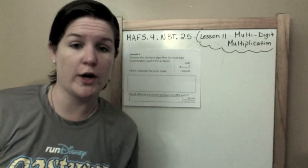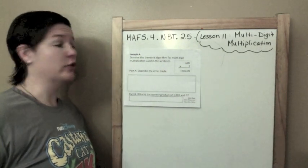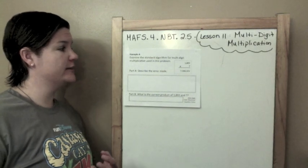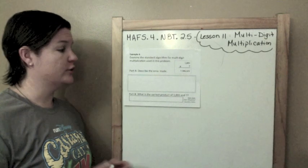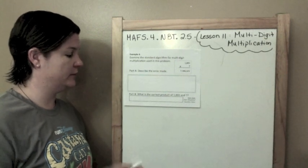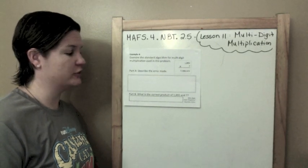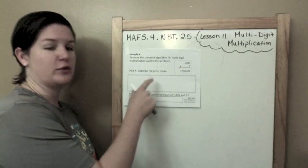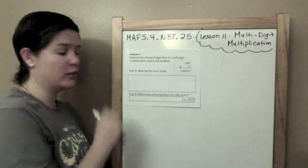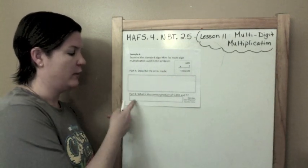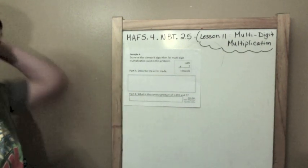Example 4. Last one today. Examine the standard algorithm for multi-digit multiplication used in this problem. Describe the error that was made. Part B. What is the correct product of 1,893 and 7? So we've got an open response item here where we have to explain in words and sentences. And we have an equation editor here where I'm just placing my answer, my number in there.